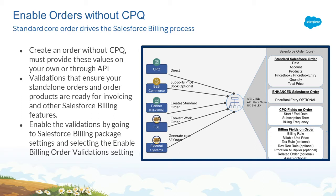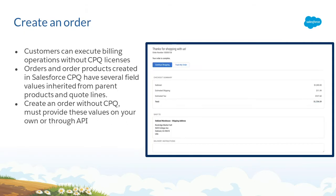Now customers can create orders with values of their own or by using an API. We have introduced validations that ensure your standalone orders and order products are ready for invoicing. You can enable them by going to Salesforce package settings and selecting enable order validation. Please note, the Salesforce CPQ package needs to be installed to create orders and order products. While you won't use any Salesforce CPQ features or objects, Salesforce Billing still runs internal validations against the CPQ package for several features and workflows.